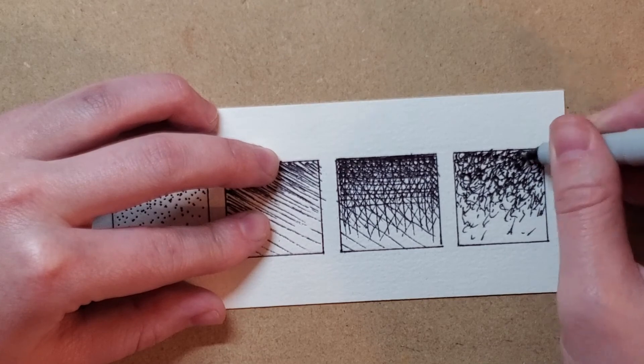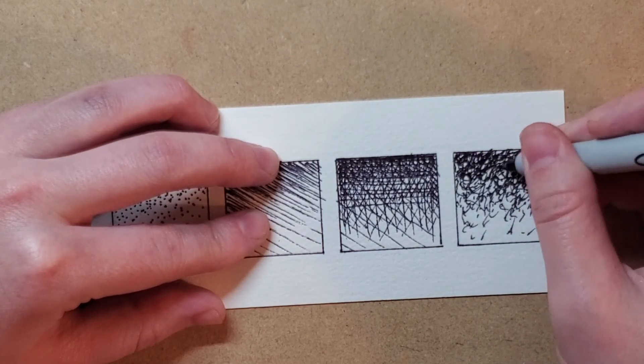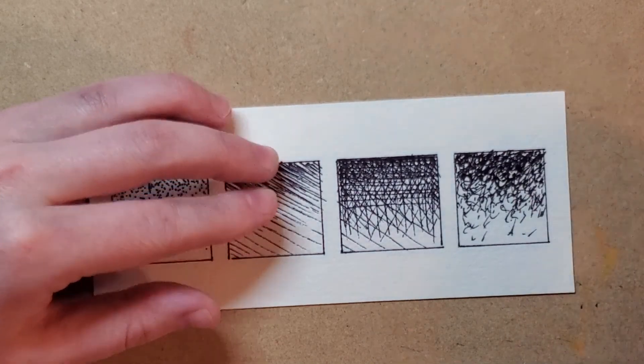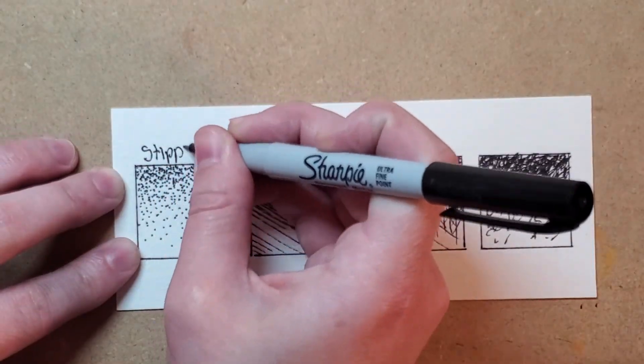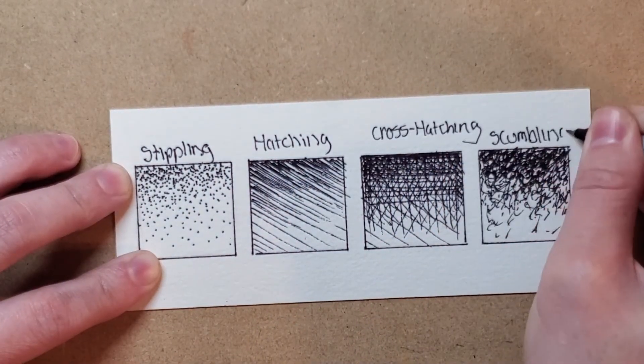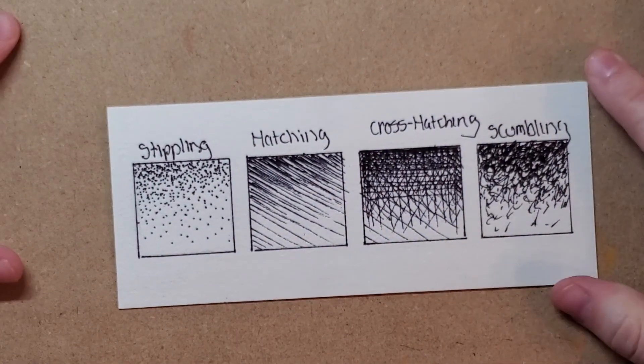Some projects look good with a variety of mark making techniques. Some projects look better if you just kind of stick with one. It depends on how you pull it off. So these are four major mark making techniques.